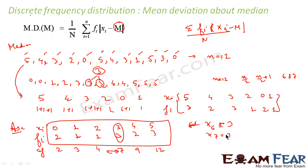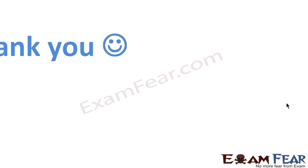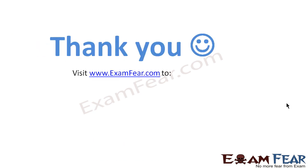Since x6 and x7 are both 3, the median is (3+3)/2 = 3. So to summarize: for a discrete frequency distribution, arrange in ascending order, find cumulative frequency, determine n, then find the middle term(s) — averaging two if n is even, or taking the (n+1)/2 th term if n is odd. That's how you find the median.